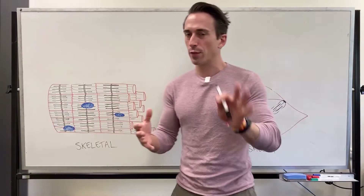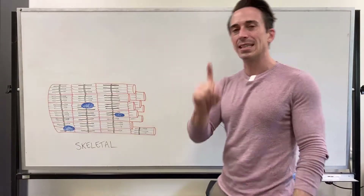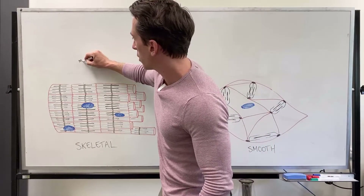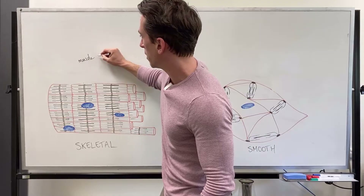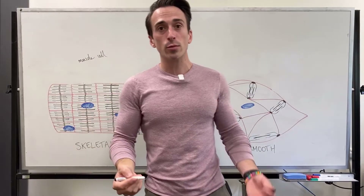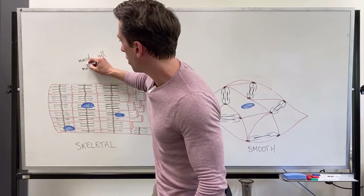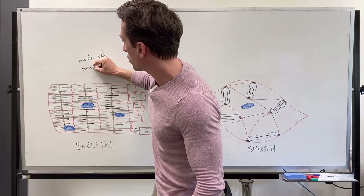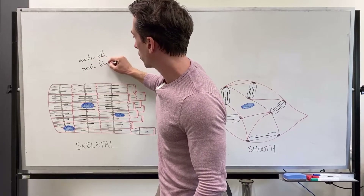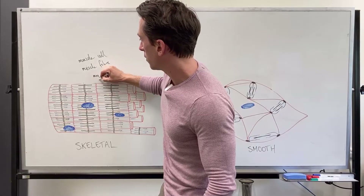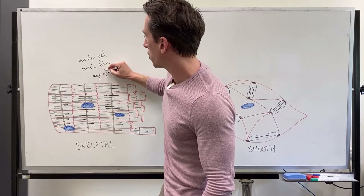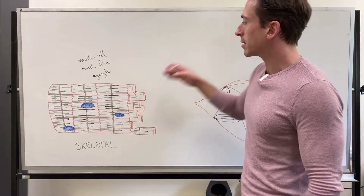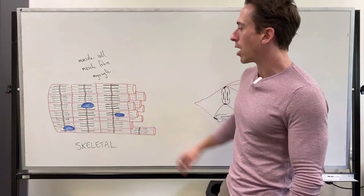You can see that this is a single skeletal muscle cell. The whole thing here is a muscle cell, which is sometimes also called a muscle fiber, or sometimes also called a myocyte. They're all synonymous with one another — they mean the exact same thing: muscle fiber, muscle cell, myocyte.